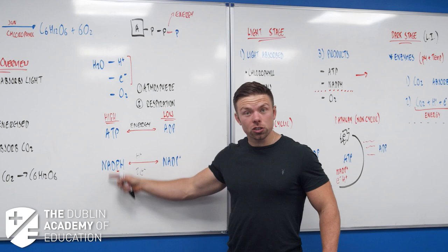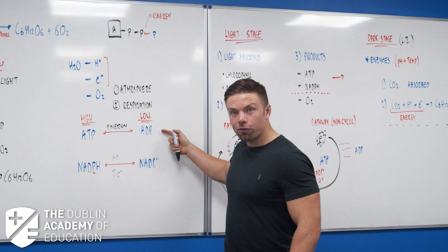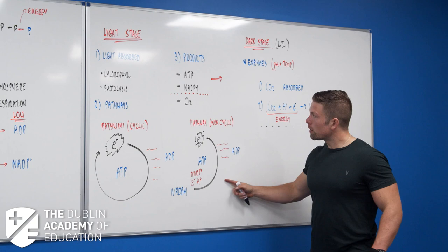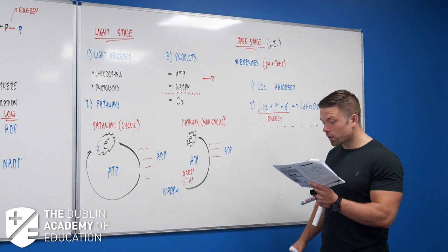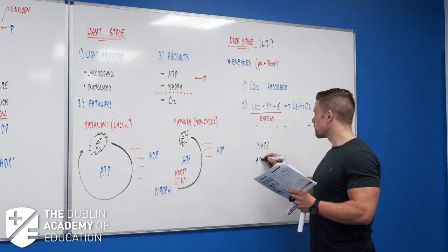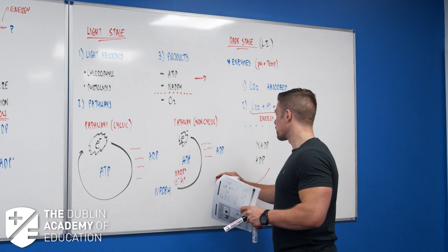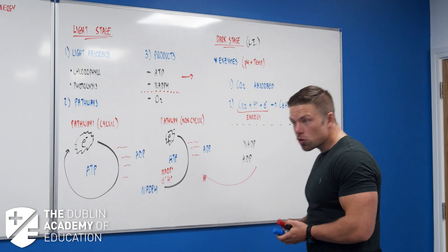Once both high energy molecules are used up, they return to low energy molecules. They take their contents from the light stage to the dark stage, drop off their passengers, and are now empty buses. They return back to the light stage to go again. So NADPH returns to NADP+ and ATP returns to ADP, and they cycle back into the light stage. That's photosynthesis.